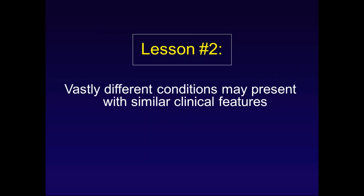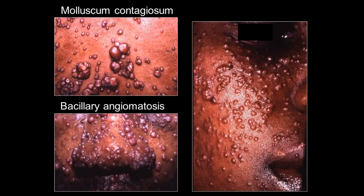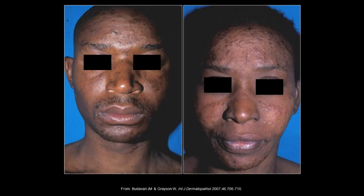Looking at three clinical images that look identical, they are in fact from three different patients with very different diseases. One patient has molluscum contagiosum with giant lesions, one has bacillary angiomatosis, and the other has cutaneous cryptococcosis. This emphasizes why it is so important to biopsy these lesions and not presume something is molluscum when it's in fact bacillary angiomatosis or cryptococcosis — that could have a devastating impact on the patient's outcome.